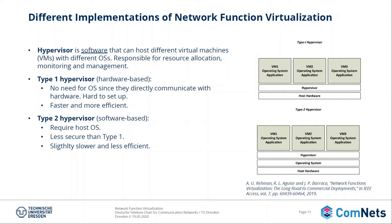There are two types of hypervisor. A hardware-based Type 1 that is faster, more efficient, and doesn't need an operating system — directly communicating with the hardware — but is more difficult to set up. And a Type 2 hypervisor, software-based, which requires a host operating system but is easier to set up, though less secure, slower, and less efficient.